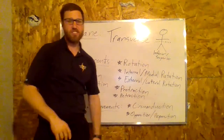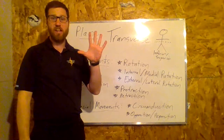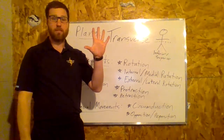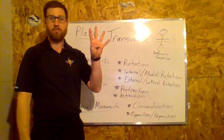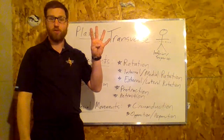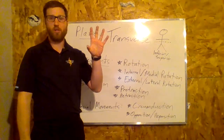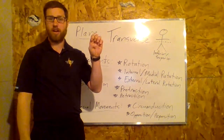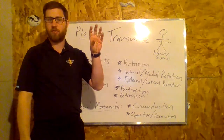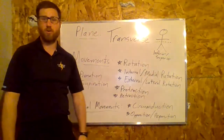Opposition and reposition is a special movement that occurs only at the thumb, existing in two planes. Opposition is taking my thumb and pointing it to my pinky finger. Reposition is the movement of it going back. We really only use it when we grip, which is an important function. Opposition and reposition only occur at the thumb.